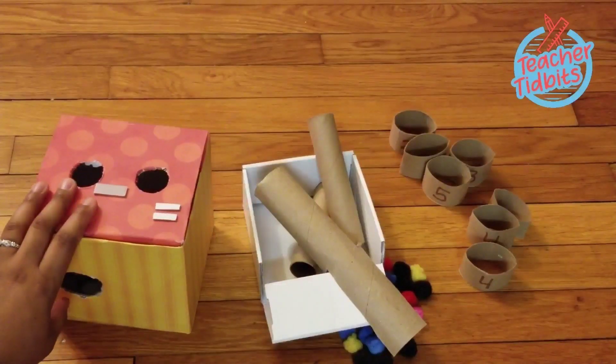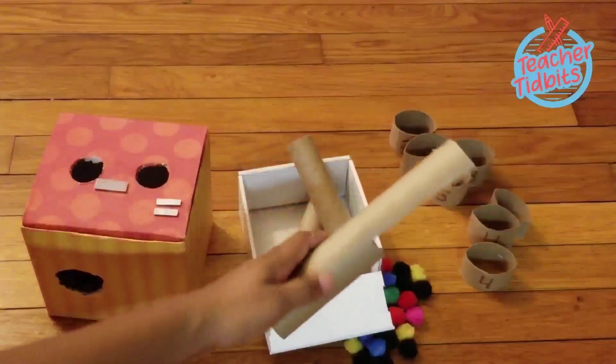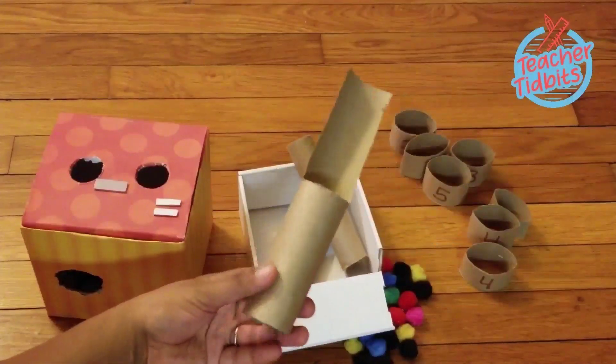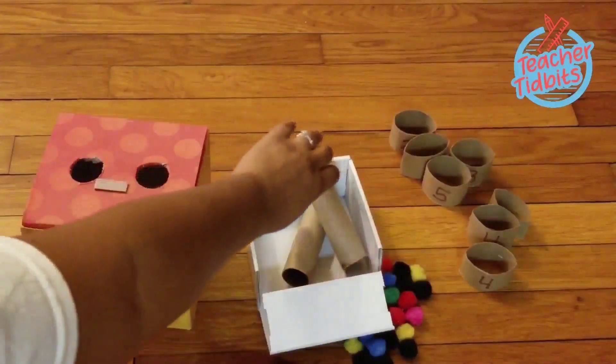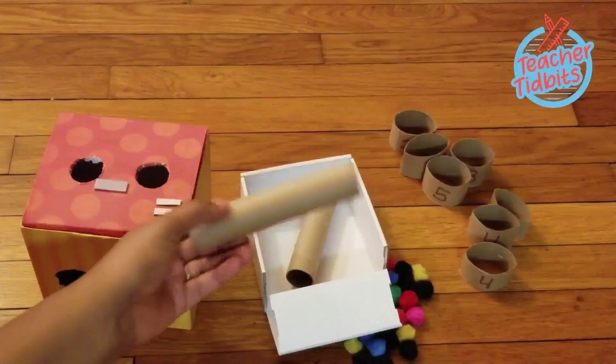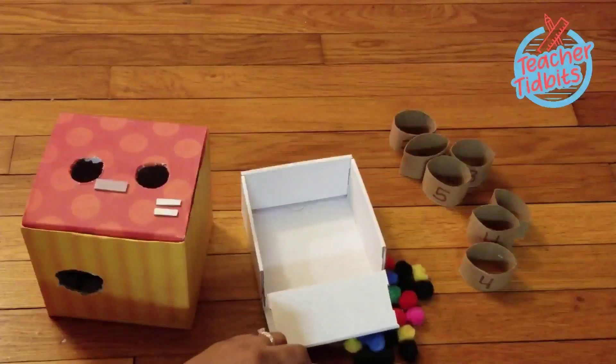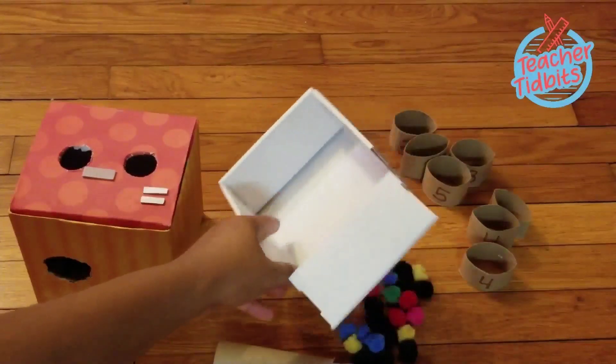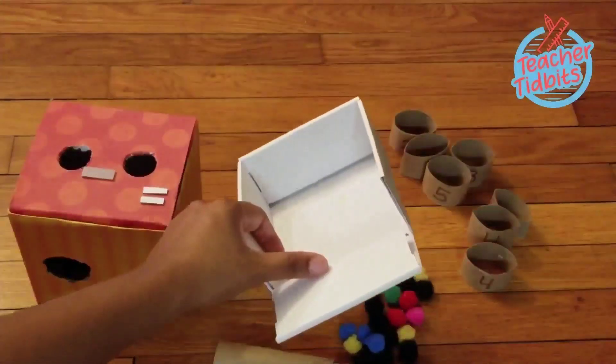So first things first, you want to go ahead and take the paper towel roll that you've cut and made a simple round. You're going to insert that in the middle hole, and then you're going to take your two sturdier aluminum foil rolls and place them at the top.